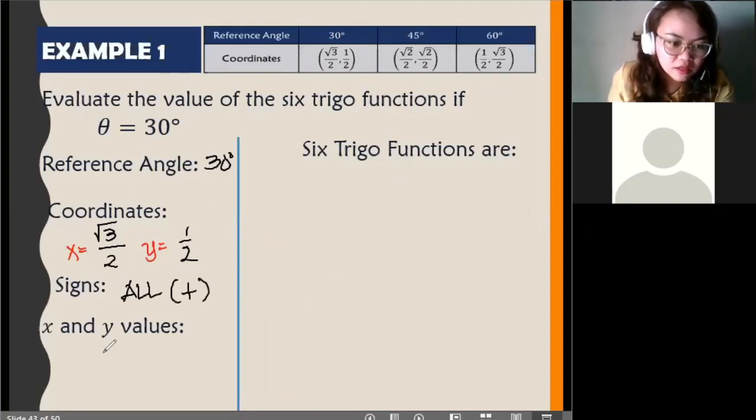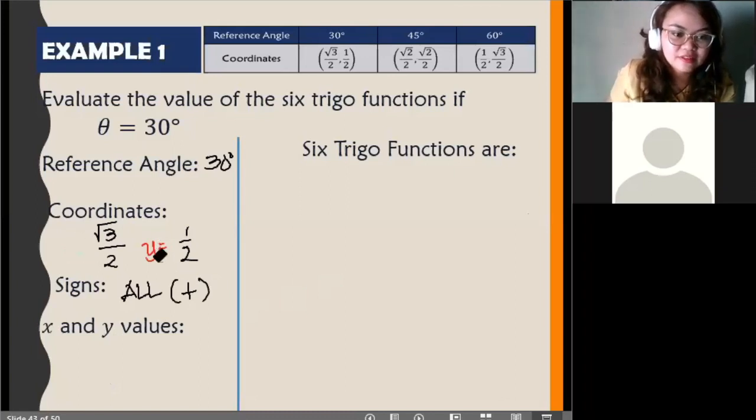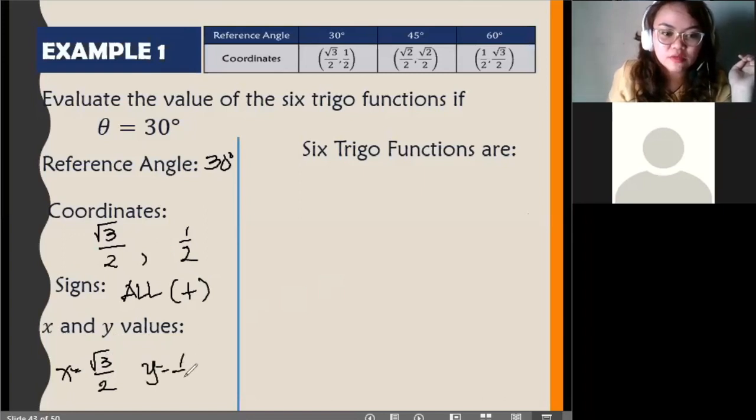Next, x and y values. Ito pa lang pala siya sa ilalim. Di ko napansin yun. Let's remove that. And then, let's just write it. x will be square root of 3 over 2. And then, y is one-half.